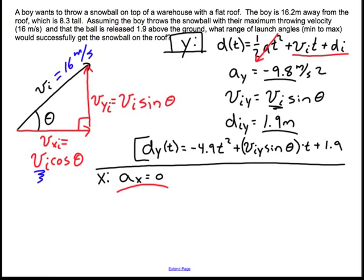So in the x direction, I can write this function, that d in the x as a function of time is going to be equal to the initial, which I had solved over here was vi cosine theta, that quantity multiplied by time plus di. I'm going to go ahead and define that as far as the horizontal is concerned, the position of the boy is zero.